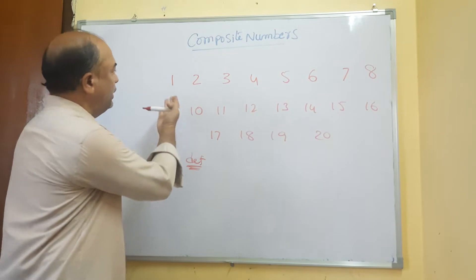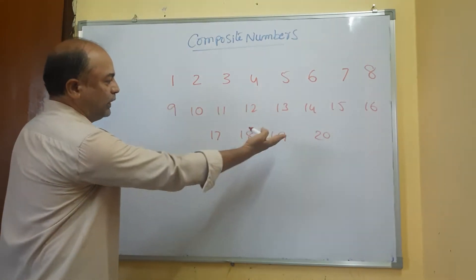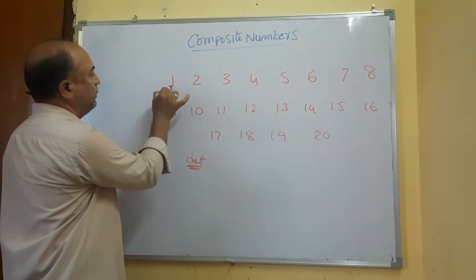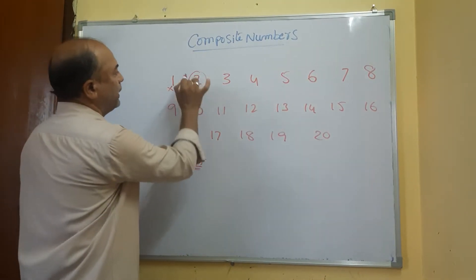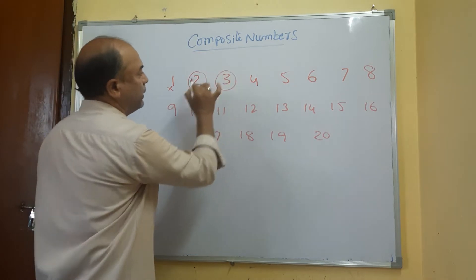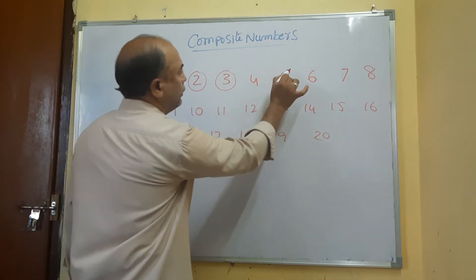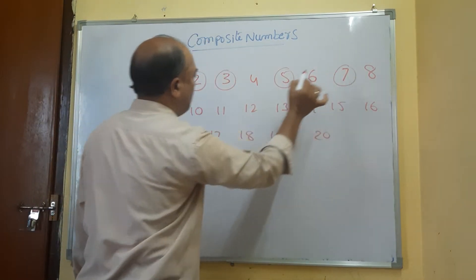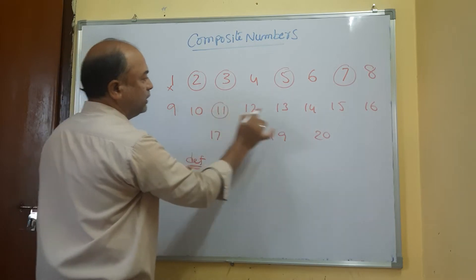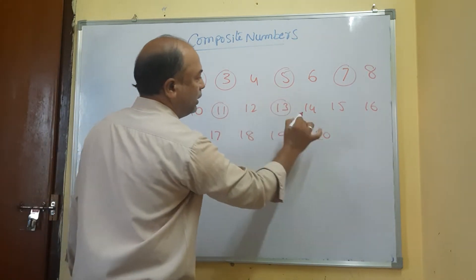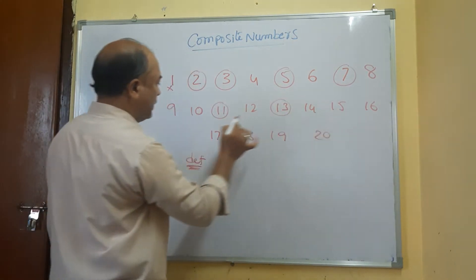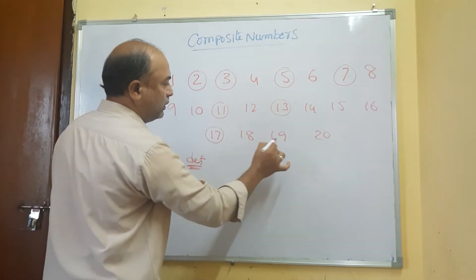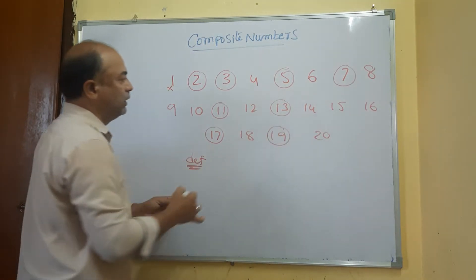Here from 1 to 20: 1 is neither prime nor composite. 2 is a prime, 3 is a prime, 5 is a prime number, 7 is a prime number, 11, 13 are prime numbers, 17 and 19 are prime numbers.